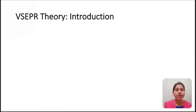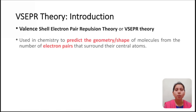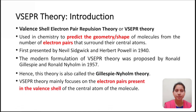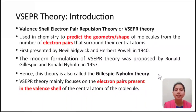Now let us see VSEPR theory. Valence shell electron pair repulsion theory is abbreviated as VSEPR theory. It is used in chemistry to predict the geometry or shape of molecules from the number of electron pairs that surround their central atoms. This theory was first presented by Sidwick and Powell in 1940. The modern formulation of VSEPR theory was proposed by Ronald Gillespie and Ronald Nyholm in the year 1957. Hence, this theory is also called as Gillespie-Nyholm theory.